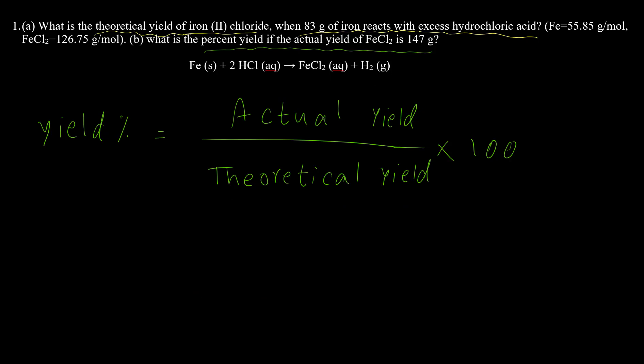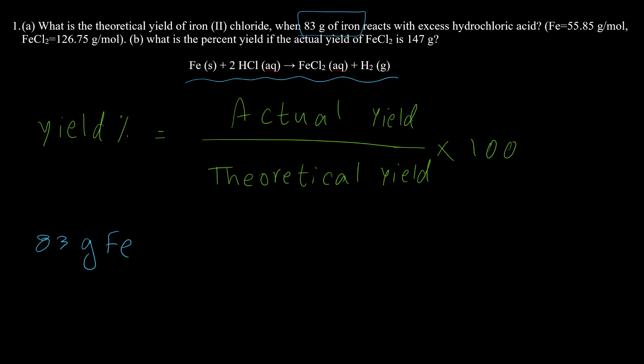For solving this problem, the first step is to make sure the equation is balanced. Checking the equation, we can see it's already balanced — the number of atoms on the left and right sides are equal. After that, we calculate the amount of product based on the reactant. The question says we use 83 grams of iron, so we want to know how much iron chloride is produced.